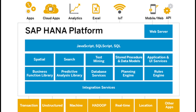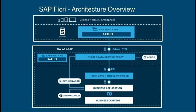Looking at the architecture of the HANA platform, it involves many components: Hadoop, machine learning, unstructured data, data mining, and data science. These are segregated into different layers — a web server layer, scripting layer, search layer, integration layer, and application layers. HANA can unleash analytics not possible with regular ECC, and supports cloud applications, IoT, mobile or web interfaces, and APIs, making it a one-stop solution for most problems.